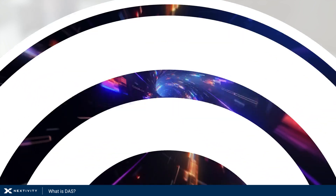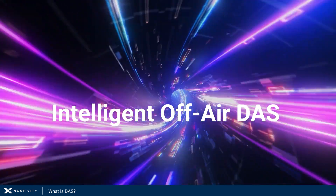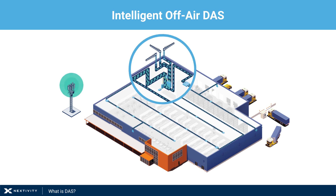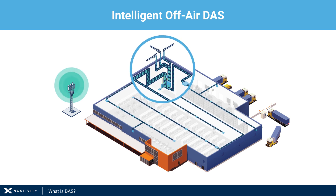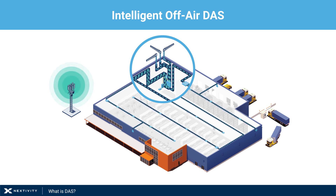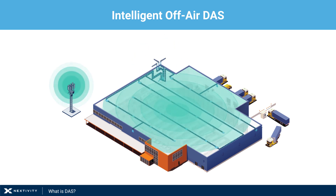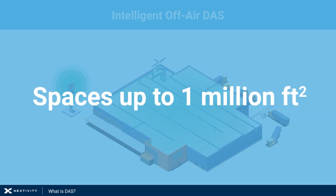The other type of off-air DAS is an intelligent off-air DAS. These systems provide outstanding network coverage using active signal amplification components as part of the DAS at an affordable cost. Intelligent off-air DAS will take care of coverage issues quickly by pulling in signals off-air from the outdoor network and using active components to deliver strong, reliable connectivity in any indoor space.